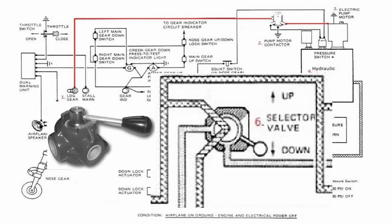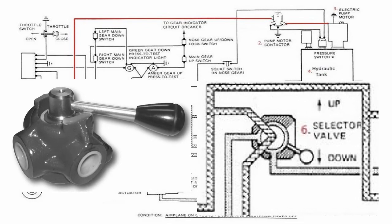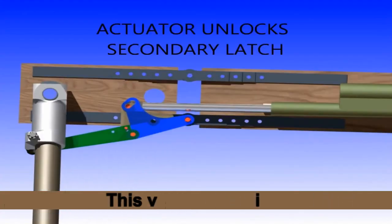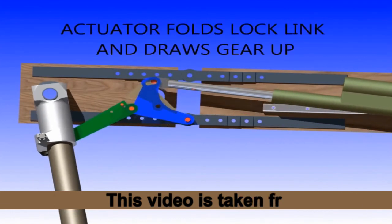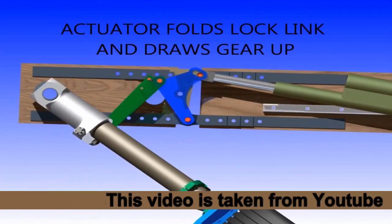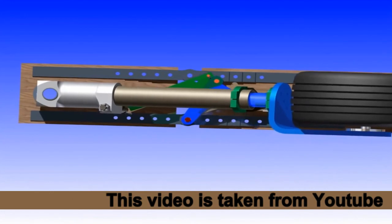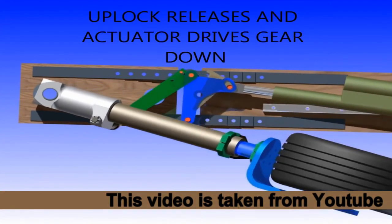Here, the selector valve will control the pressure flow direction to the required actuator, depending on the input. Finally, the hydraulic pressure arrives at the selector actuator. The actuator will retract the wheels and close the landing gear door, or open the landing gear door and extract the wheels.